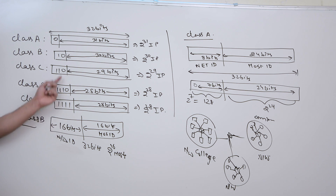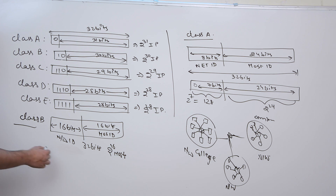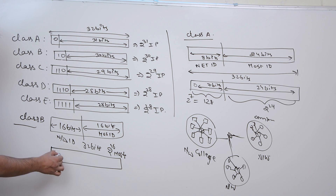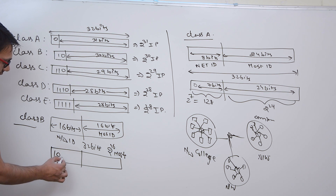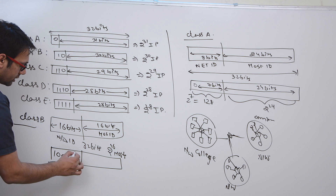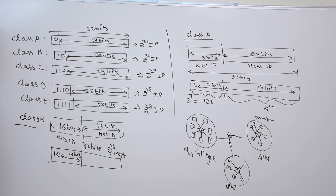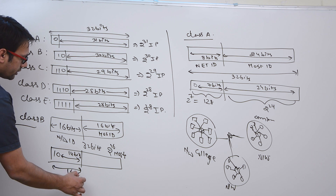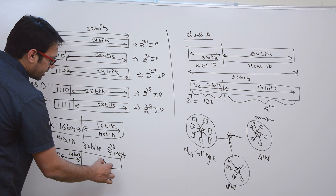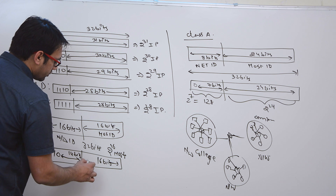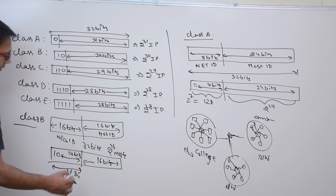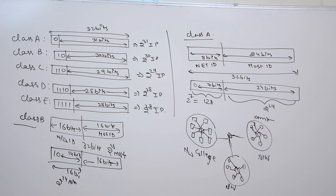In class B, 2 bits are fixed. Out of the first 16 bits, the first 2 bits are 1, 0 which are fixed, and the remaining 14 bits can take any combination. So total 16 bits are for the network ID and 16 bits for the host ID. Therefore we can have 2 raised to power 14 networks in case of class B, where the first 2 bits are 1, 0.